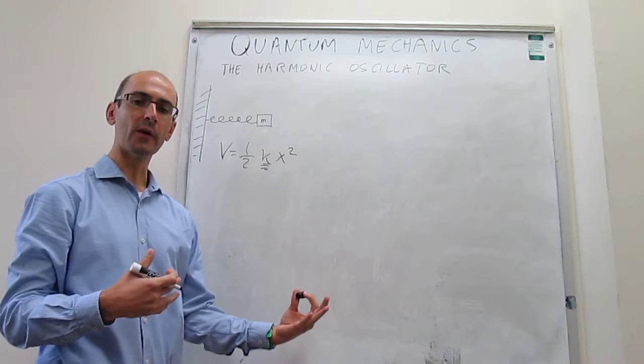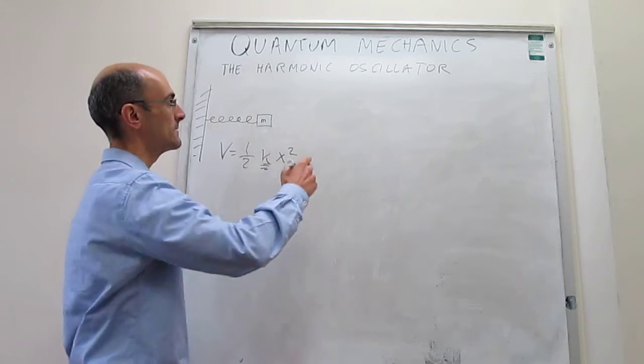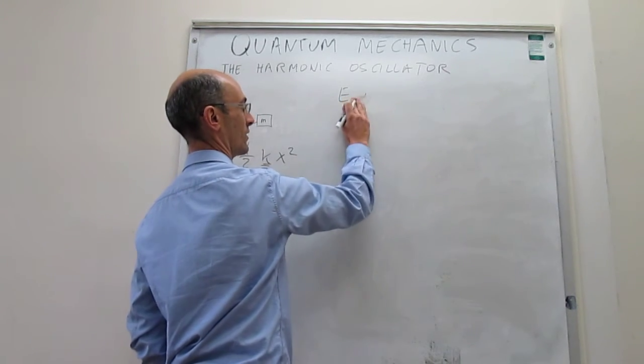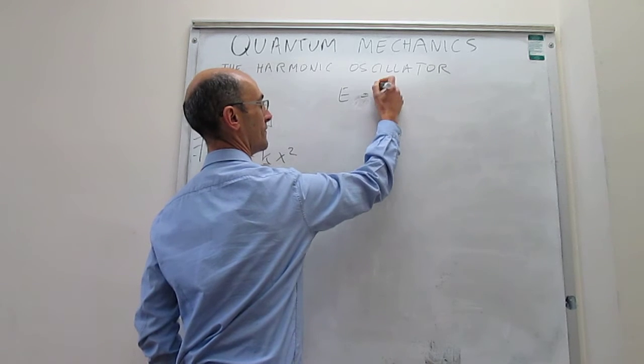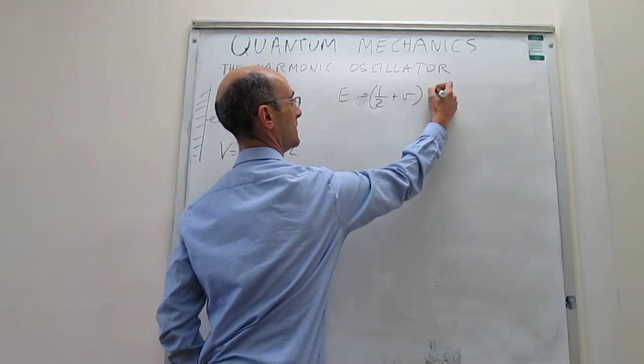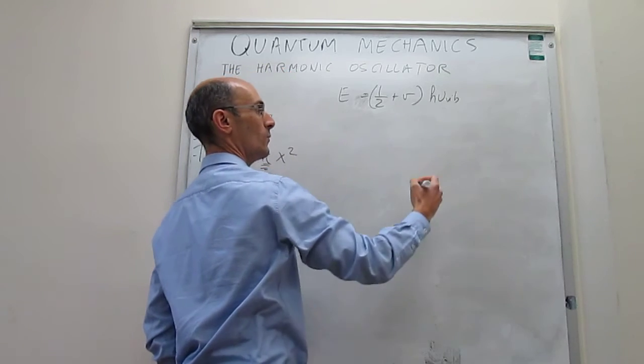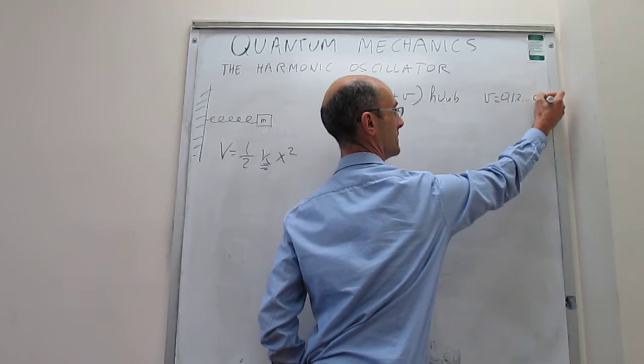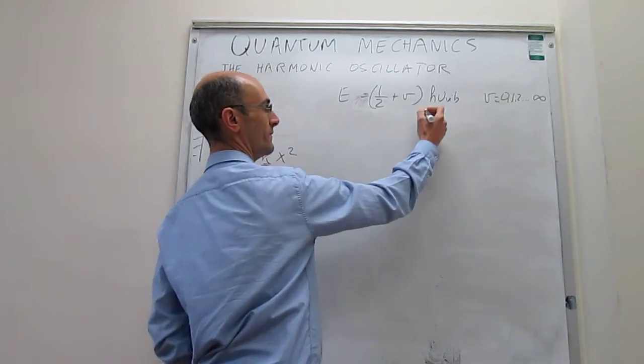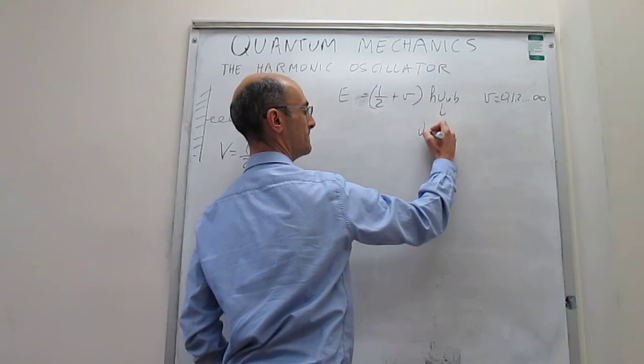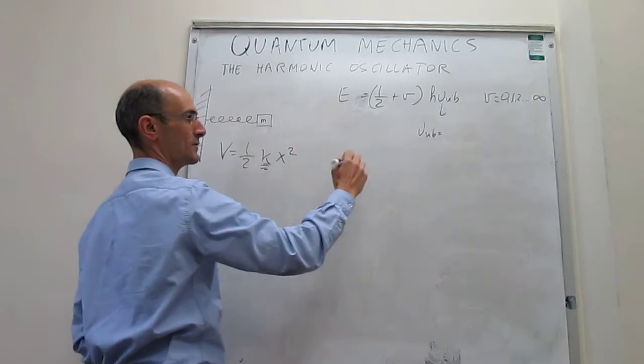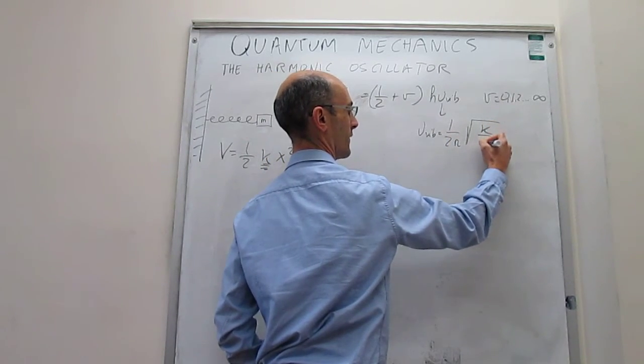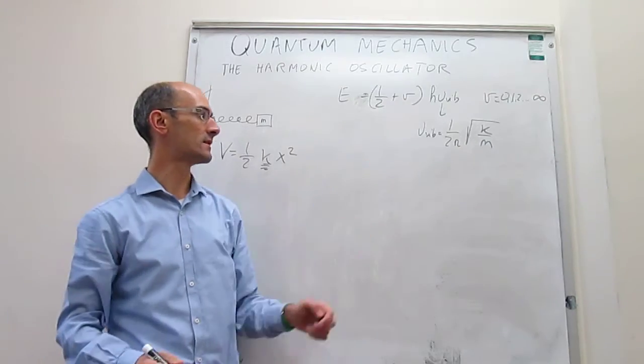We have set up the Schrödinger equation for this system, we have solved it, and we have found that the energy is E = (1/2 + v)h𝜈_vib, where v is the quantum number going from zero to infinity as an integer. 𝜈_vib is the vibrational frequency with expression (1/2π)√(k/m), where k is the force constant.